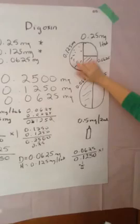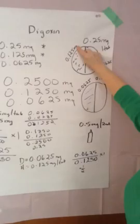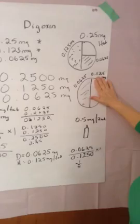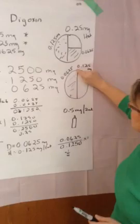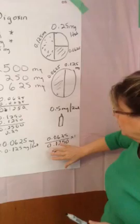I even suggest you do a cue card for digoxin where you show here's my tab, that's 0.25, 0.125 milligrams is half. In this one, here's my tab, that's 0.125. If the order is 0.125 and I've got that, I give one tab. If it's 0.0625, I'm going to give half a tab.